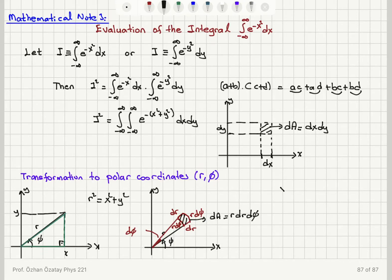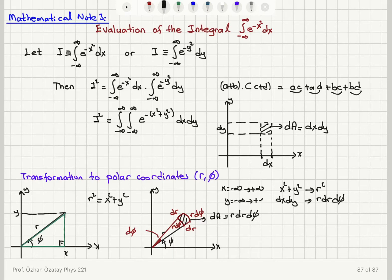So in my transformation, x squared plus y squared is replaced by r squared, and dx dy is replaced by r dr dφ — the incremental area element in polar coordinates. Furthermore, since x varies from minus infinity to plus infinity and y varies from minus infinity to plus infinity, for r this means r varies from zero to infinity, while the angle φ varies from zero to two pi. Rotating through the full 360 degrees covers the entire xy plane.